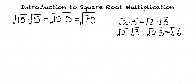So is that as simplified as it gets? Actually, we can simplify this further by factoring out any square numbers from inside the square root. A square number is a number whose square root is an integer. For example, 4 is a square number because its square root is 2, which is an integer. How can we figure out which square numbers divide into 75?